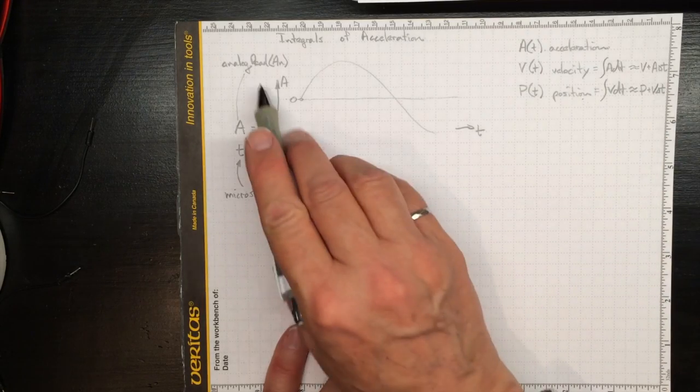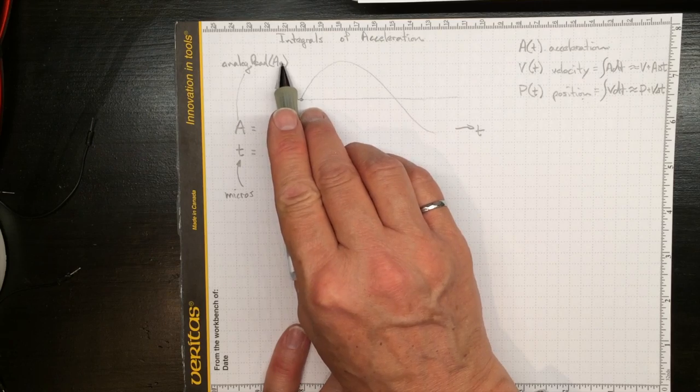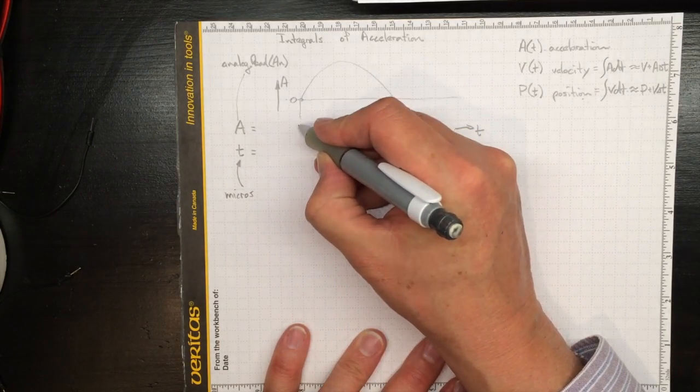So let's try that out. If we can read from our analog input port something, say from an accelerometer, that tells us what the acceleration is at this point in time.